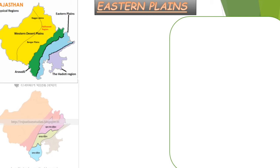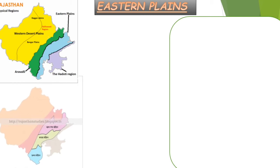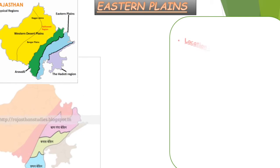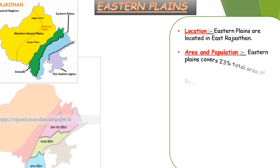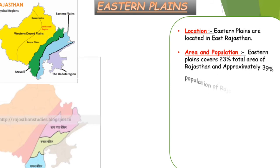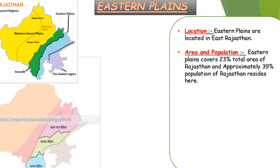Regarding location, the Eastern Plains are situated on the eastern side of Rajasthan. The Eastern Plains cover 23% of the total area of Rajasthan and approximately 39% of Rajasthan's population resides here.